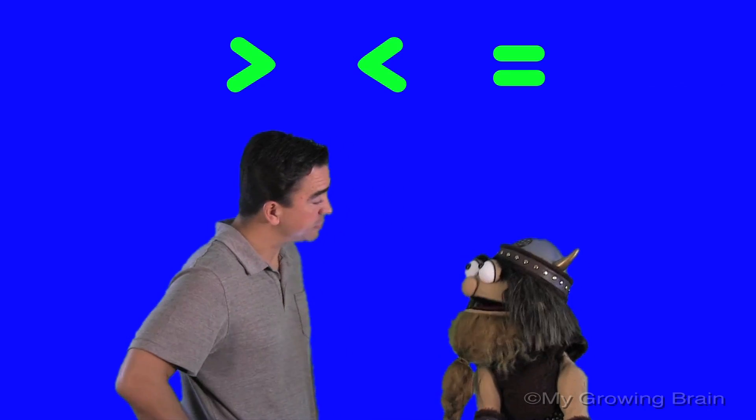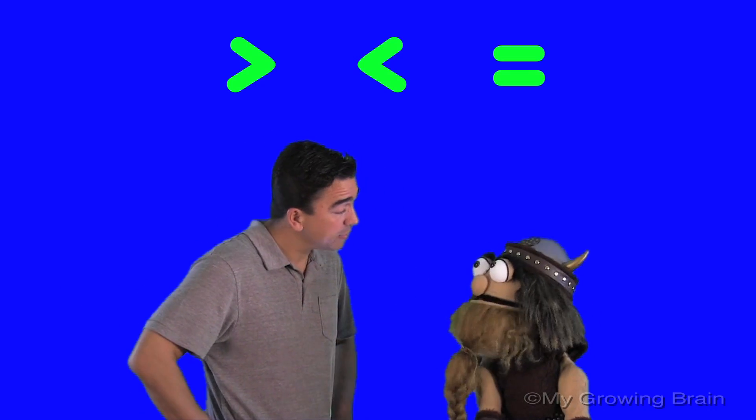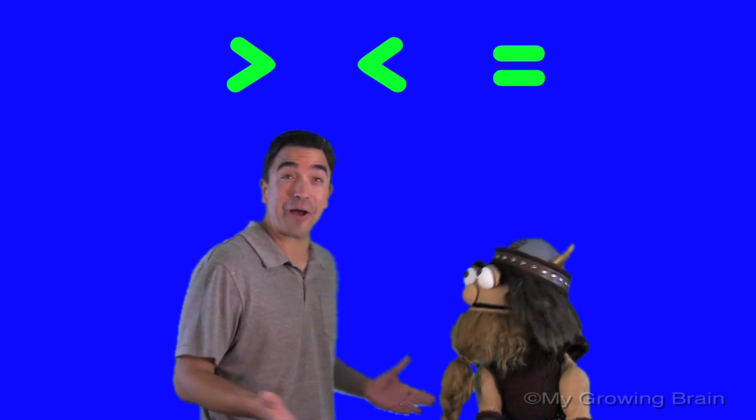Hello, Coach Mike. I know what the equal sign is for. Oh, you do? Well, what's it for, Oli? Well, it's used to show that two things are equal to the same amount. That's correct. Good job, Oli.